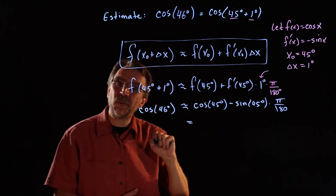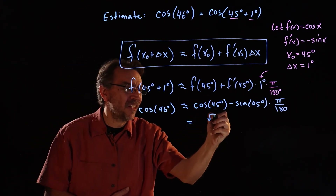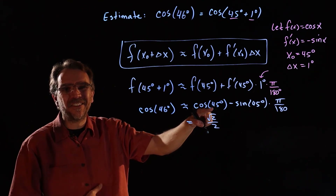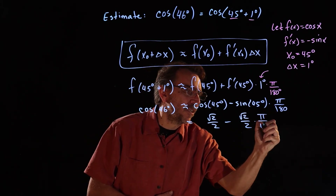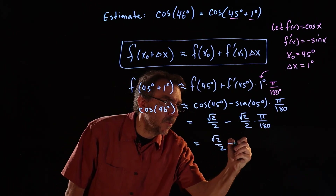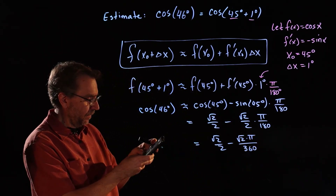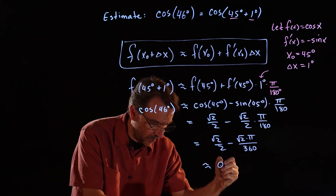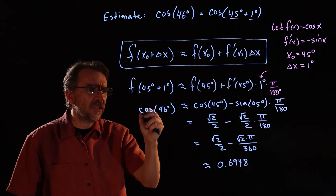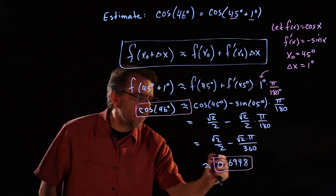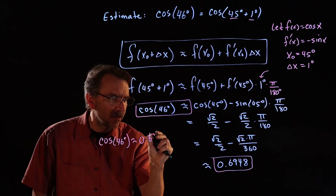Working in radians, 45 degrees is pi over 4. Cosine of pi over 4 is square root of 2 over 2, and sine of 45 degrees is also square root of 2 over 2. So we get square root of 2 over 2 minus square root of 2 times pi over 360, which on a calculator gives approximately 0.6948 rounded to four places. So cosine of 46 degrees is approximately 0.6948.